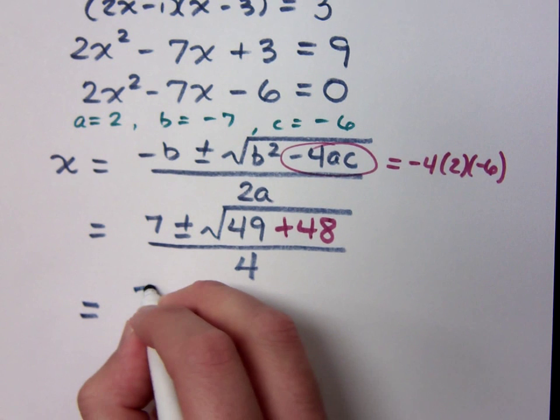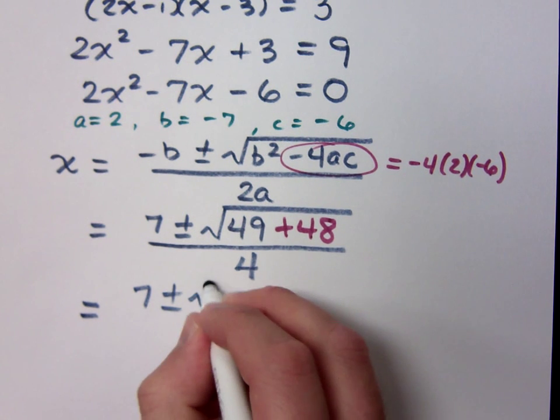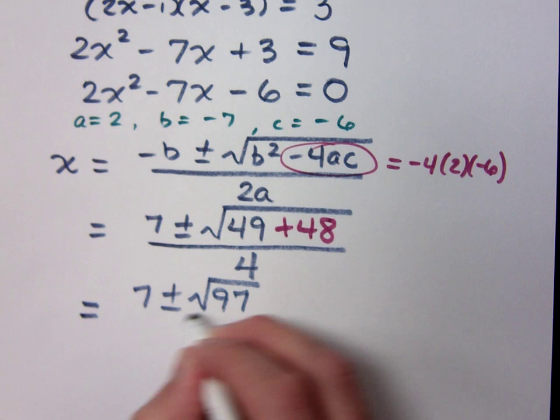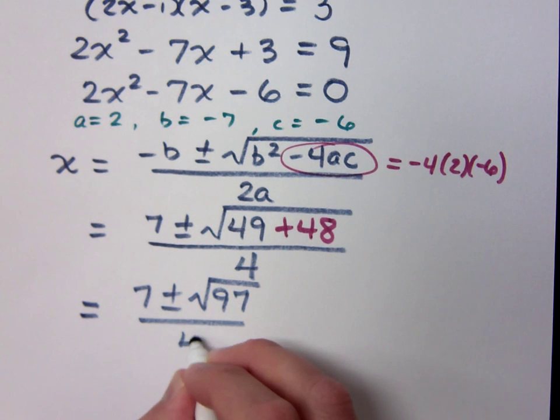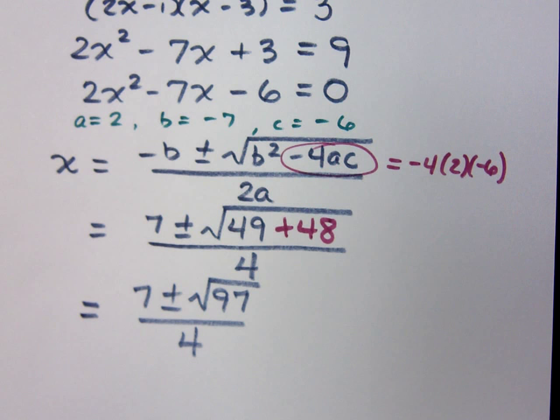So, this is 7 plus or minus the square root of what? 97. Now, the square root of 97 is going to be prime, I believe. It's a real shame, isn't it? So, I don't get to factor this guy. So, does that mean I have two answers here?